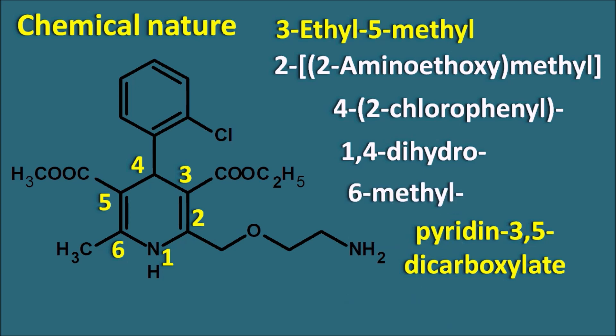That completes the name of amlodipine. The name is derived from the chemical name as follows: from amino ethoxy we take 'AM', from chloro we take 'LO', from dihydro we take 'DI', and from pyridine we take 'P' and 'INE'. So amlodipine is a calcium channel blocker having an amino ethoxy group and a chlorine group along with a dihydropyridine ring system.